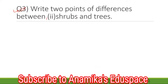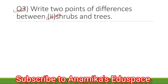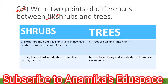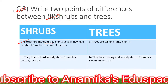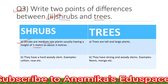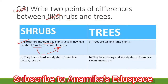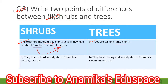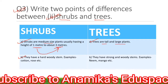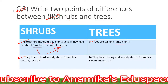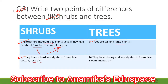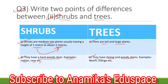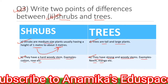Now coming to the second part of question number 3: the differences between shrubs and trees. Shrubs are medium-size plants, usually having a height of 1 metre to about 3 metres, and they have a hard woody stem — examples: cotton, rose, etc. Trees are tall and large plants, and they have strong and woody stems — examples: neem, mango, etc.